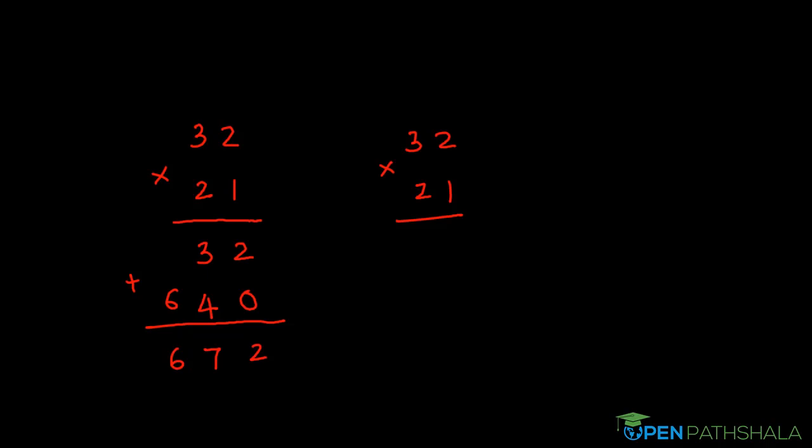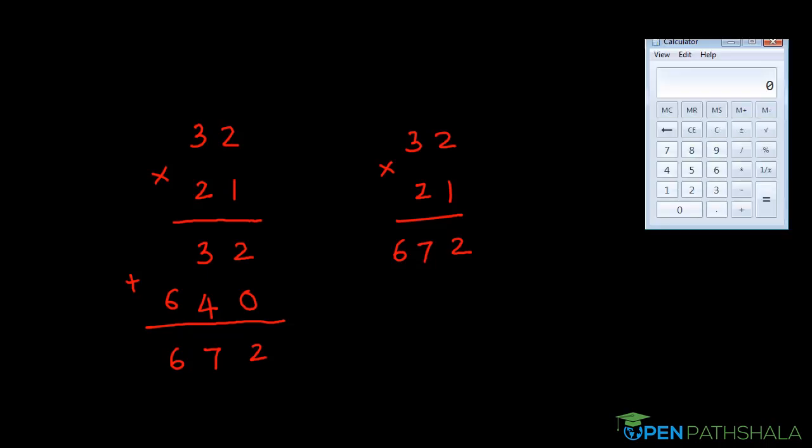So by using that sutra we can get the answer in just one single step. So I am directly writing the answer as 2 then 7 and 6. This is it. This is just one step and we get the answer. All the calculations have been done mentally. Let's check from the calculator if we got the correct answer. So we multiply 32 by 21 and the answer comes as 672 which we got correct in both the cases.